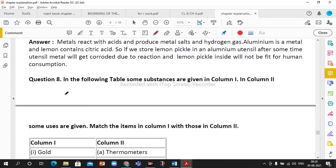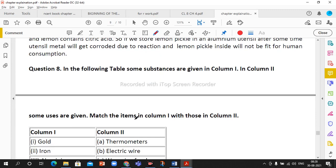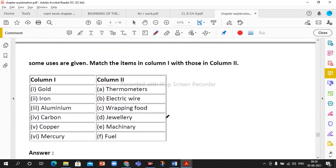In the following table some substances are given in column 1 and some uses are given in column 2. Match the items. Gold is used to form jewelry. Iron is used in machinery. Aluminum is used for aluminum foil for wrapping food. Copper is used for electric wire. Mercury is used in thermometer and carbon is used as fuel.